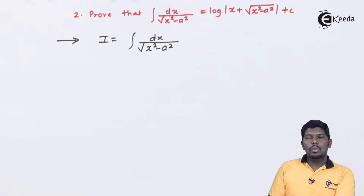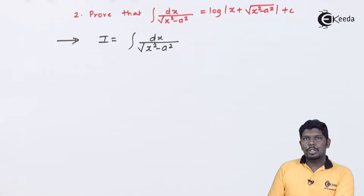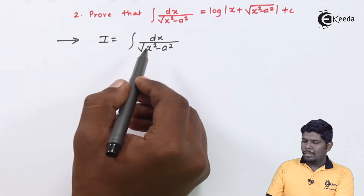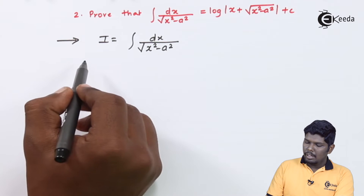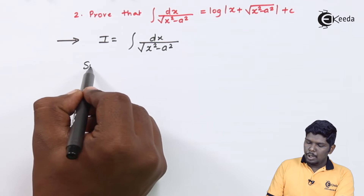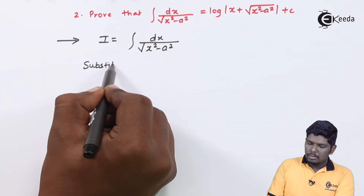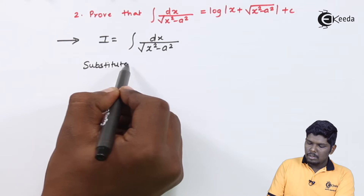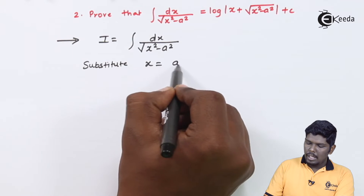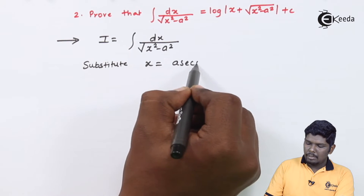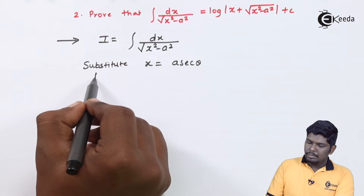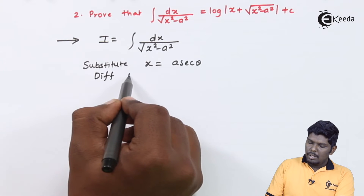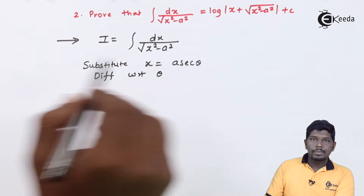For this standard expression under root x squared minus a squared, we have seen in the previous chapters also that for this we need to substitute x as a sec theta. Let us substitute x equal to a sec theta, and then we will differentiate with respect to theta.